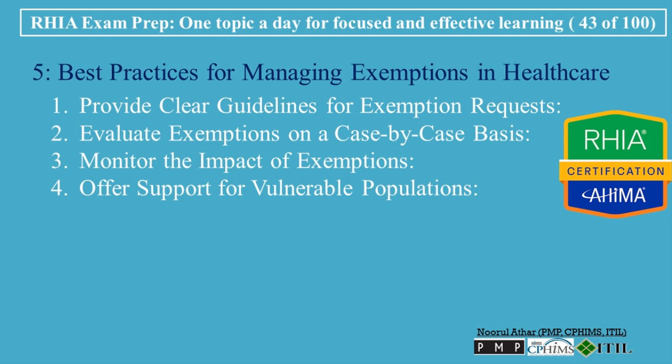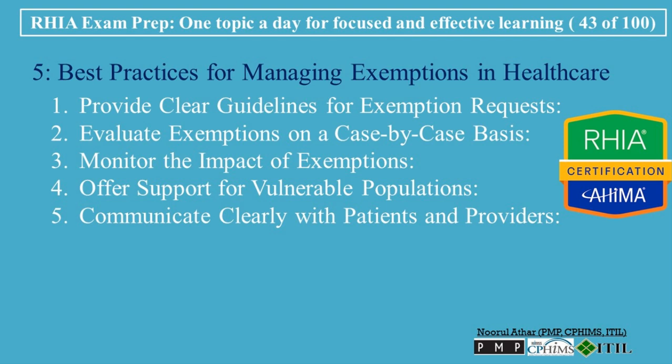Offer Support for Vulnerable Populations: For patients applying for exemptions, such as those seeking financial hardship exemptions, healthcare organizations should provide support to help navigate the process, including assistance with filling out applications, explaining eligibility requirements, and offering alternatives when necessary. Communicate Clearly with Patients and Providers: Effective communication is key — providers should clearly explain exemption options to patients and help them understand the implications. Healthcare organizations should also ensure staff are well informed about the process for applying for and managing exemptions.